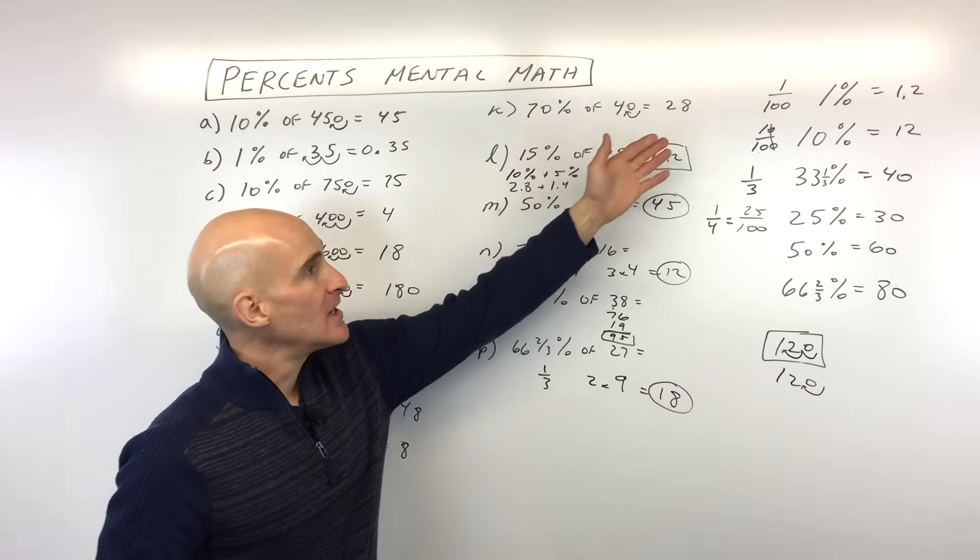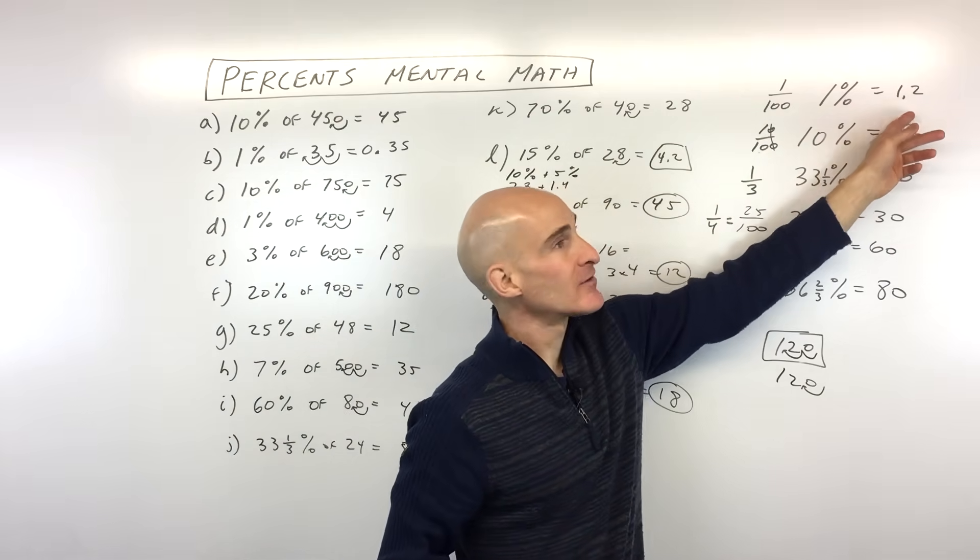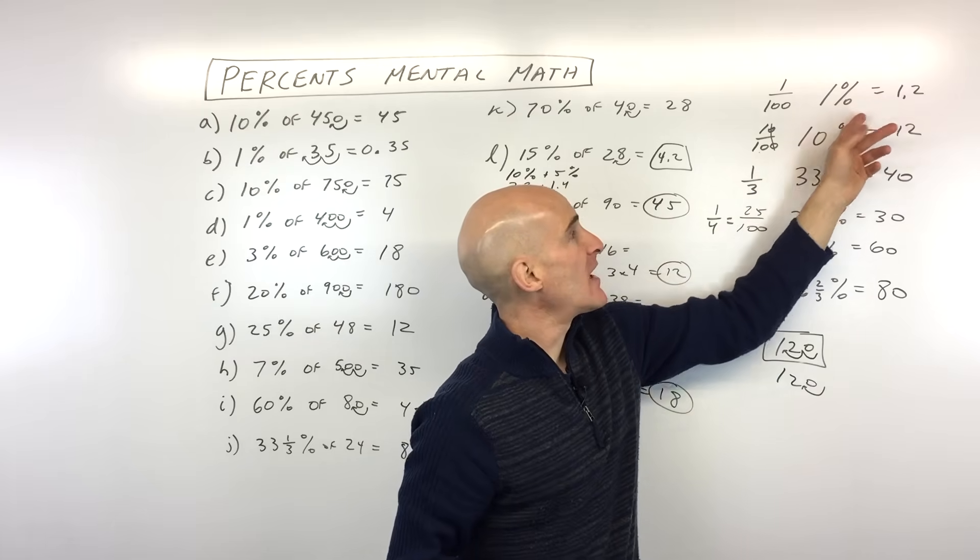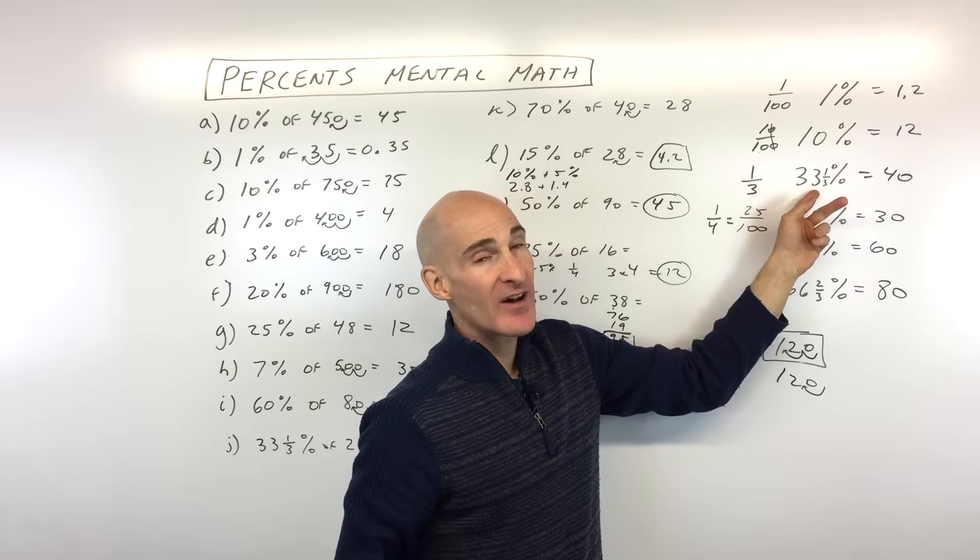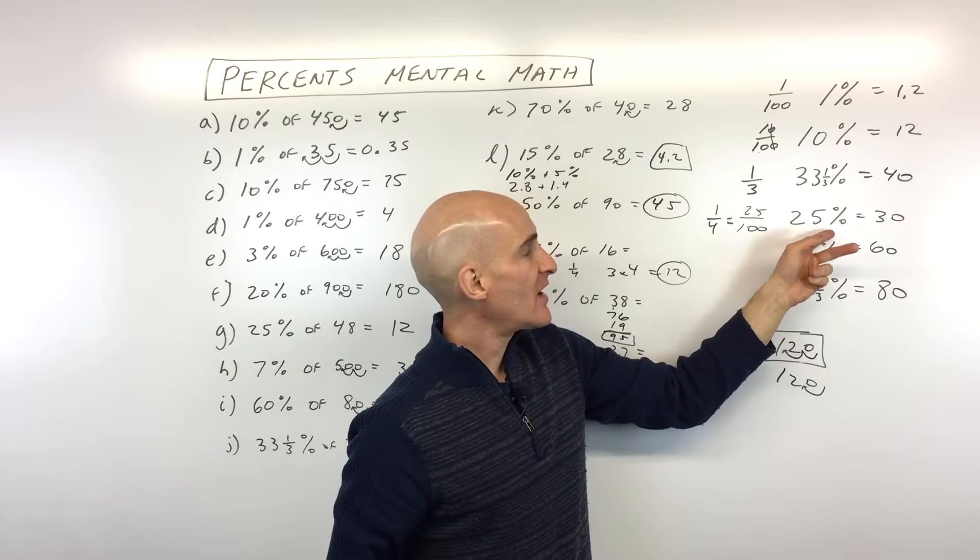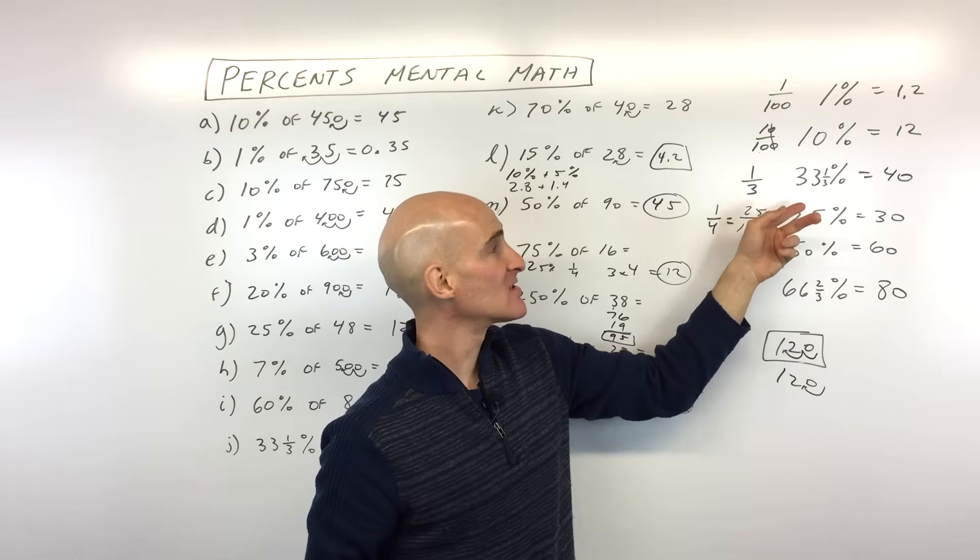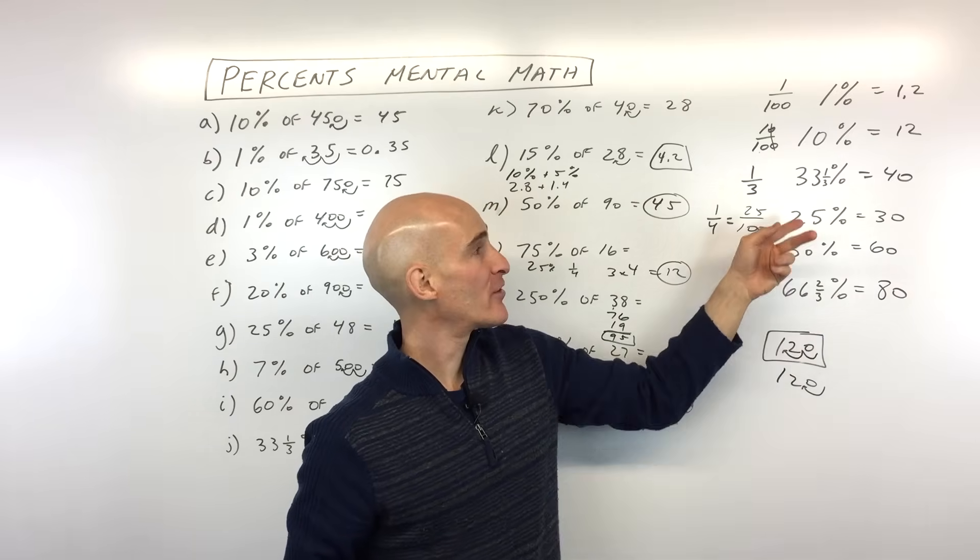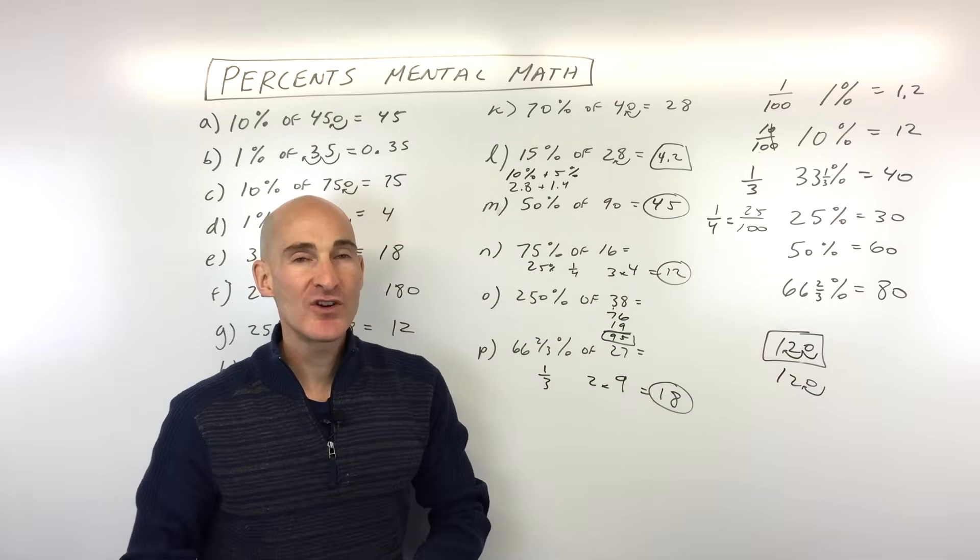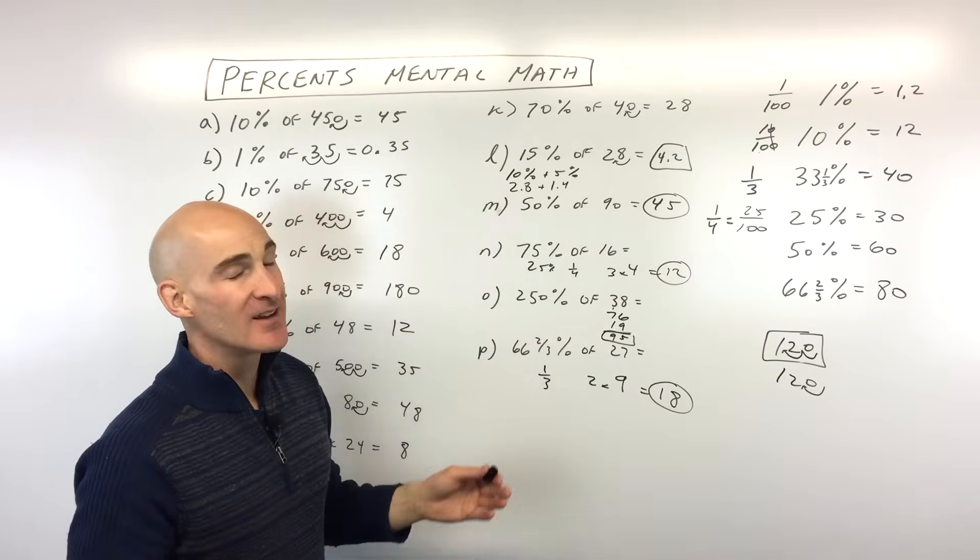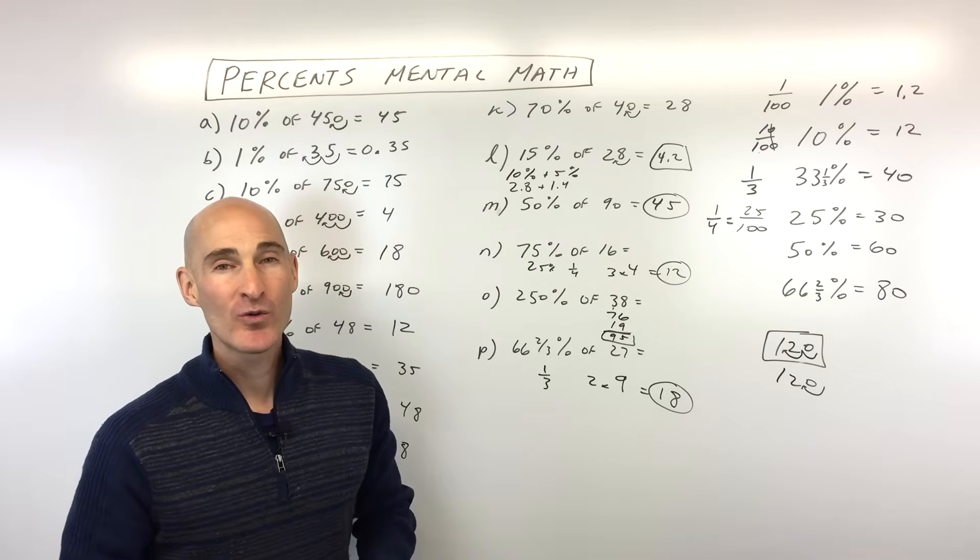So that's the basic idea. If you understand this idea of 1% moving the decimal one place to the left, I'm sorry, two places to the left. 10% you're just moving it one place to the left. 33 and a third is dividing by 3. 25% is dividing by 4. 50% is dividing in half. 66 and two-thirds is double 33 and one-third. So figure out this first and then double. Those are the key ones. If you understand those, it'll be easy to calculate these percentages mentally. So I hope that helped you understand how to work with these better.